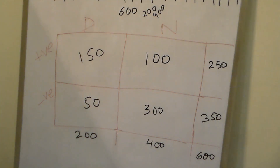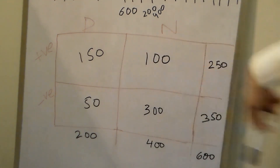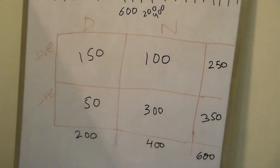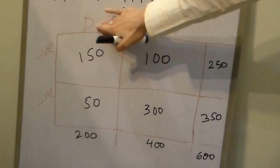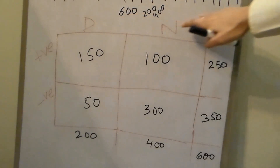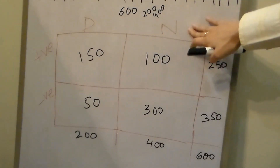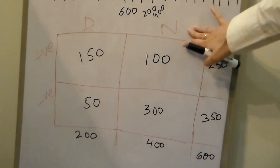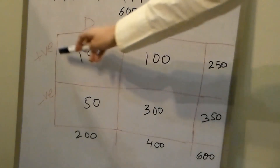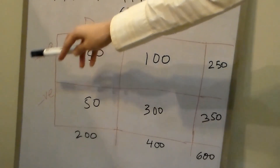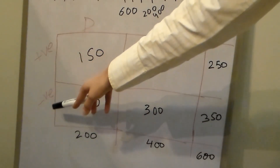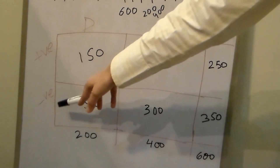Moving on, let's put the data into a two by two table. This is called a two by two table because it has two rows and two columns. The first column is for people who have the disease, and the second column is for people who do not have the disease. The first row is for people who tested positive, and the second row is for people who tested negative.